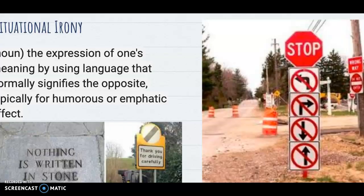Situational irony is also used, and it's one way the author creates humor — things you don't expect. For example, a stop sign where you have to stop, but you can't turn left, turn right, go forward, or go back. So you stop there — and what are you supposed to do? There's also a picture of a 'Thank you for driving carefully' sign with a car tipped over right behind it. You would not expect those two things to be in such close proximity.